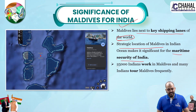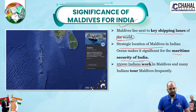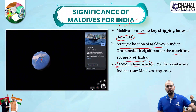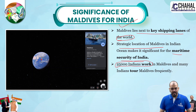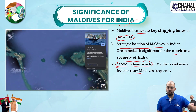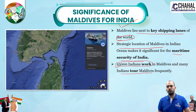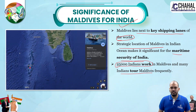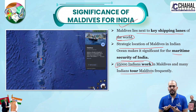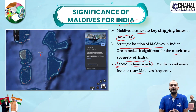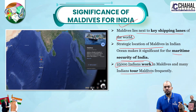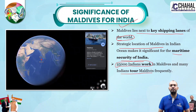There are also strong people-to-people ties. Around 25,000 Indians work in Maldives, improving people-to-people contact. Additionally, Maldives is a major tourist destination, and since Maldives' economy largely depends on tourism, this further strengthens people-to-people contact and economic linkages between the two countries.